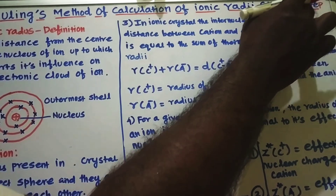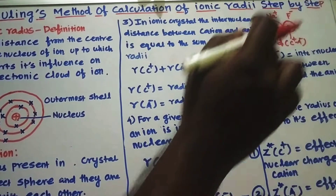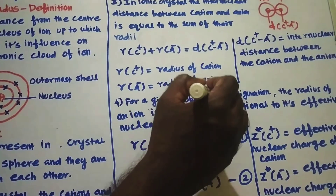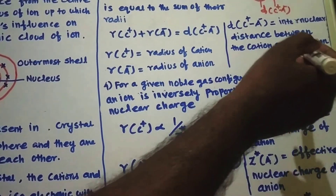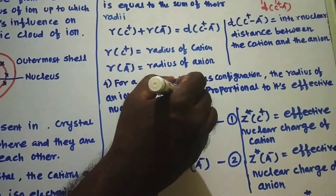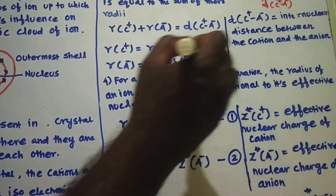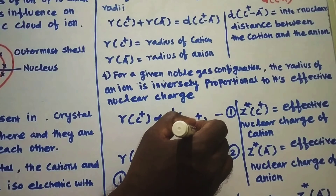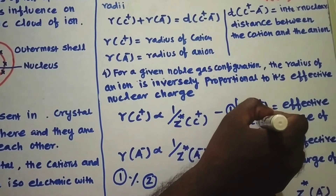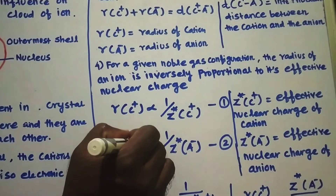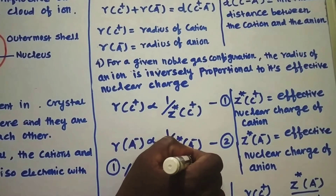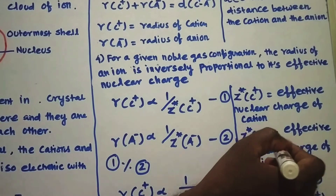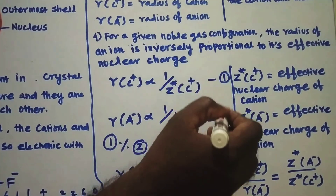Assumption number four: for a given noble gas configuration, the radius of an ion is inversely proportional to its effective nuclear charge. Therefore R(C⁺) is inversely proportional to Z* of C⁺, where Z* is the effective nuclear charge of the cation — this is equation number 1. Similarly, R(A⁻) is inversely proportional to Z* of A⁻, where Z*(A⁻) is the effective nuclear charge of the anion — this is equation number 2.